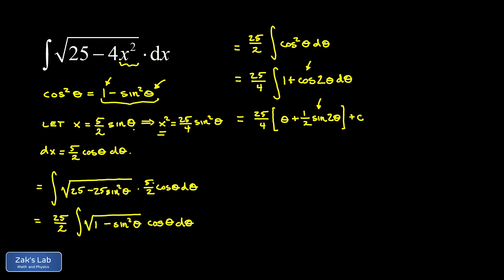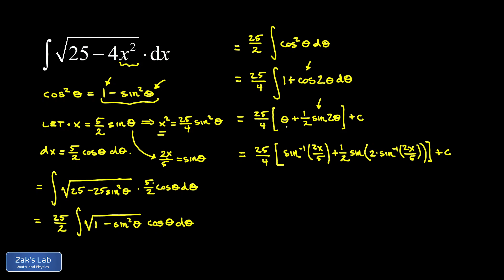We go back to our original substitution: x equals 5 halves sine theta, and we solve for theta. Multiplying both sides by 2 fifths gives 2x over 5 equals sine theta, so theta equals the inverse sine of 2x over 5. Substituting that in, the first term becomes the inverse sine of 2x over 5.